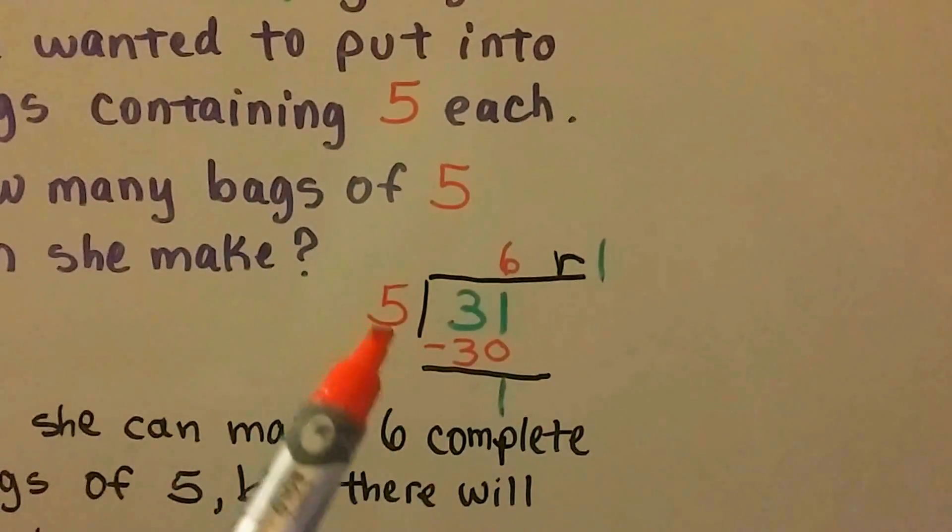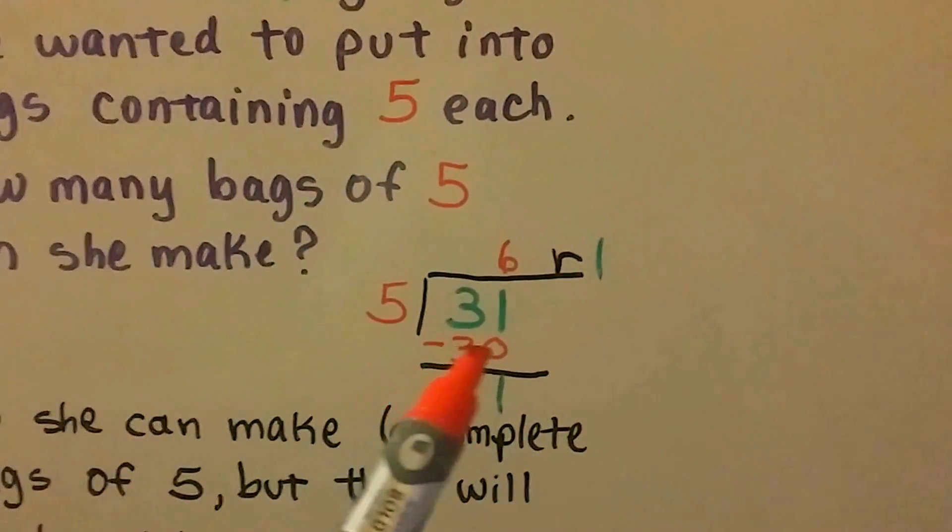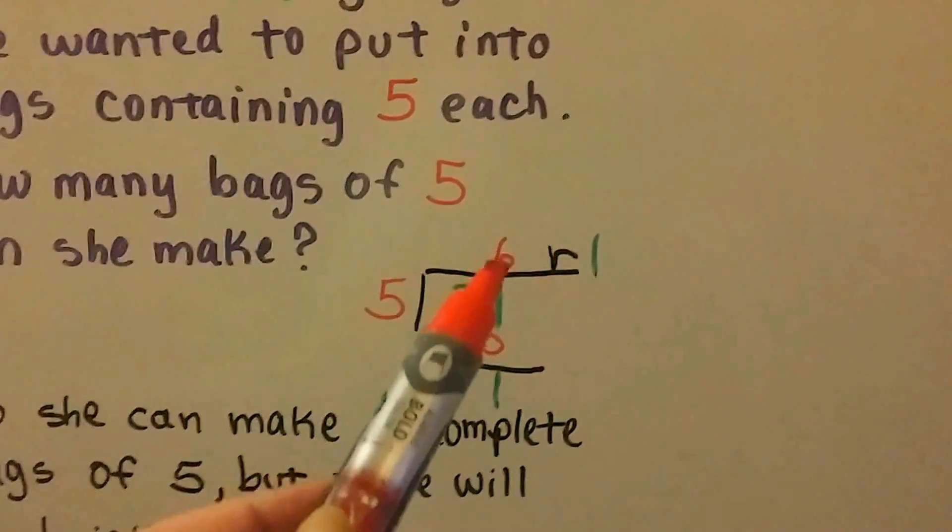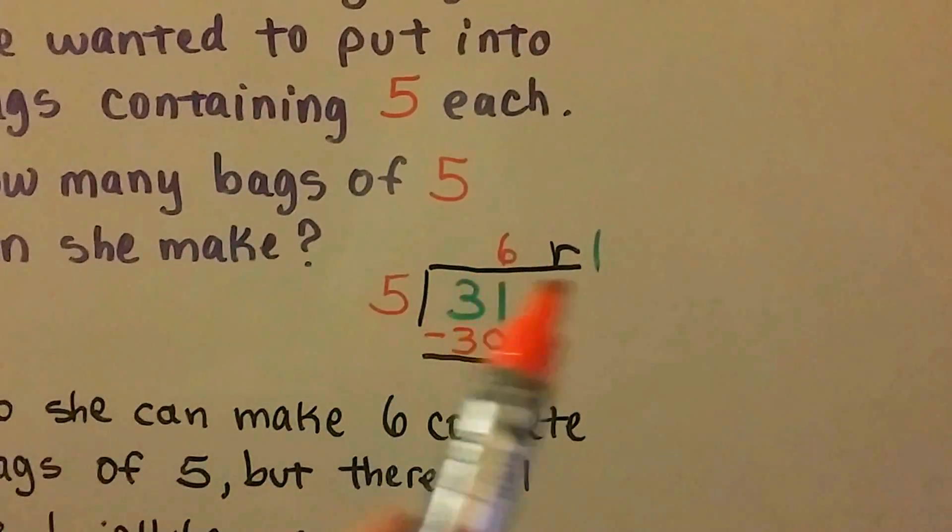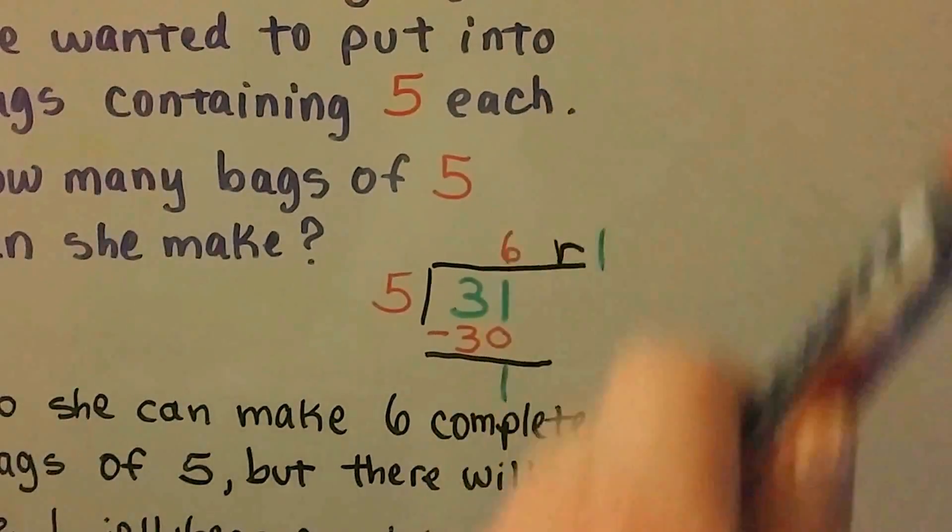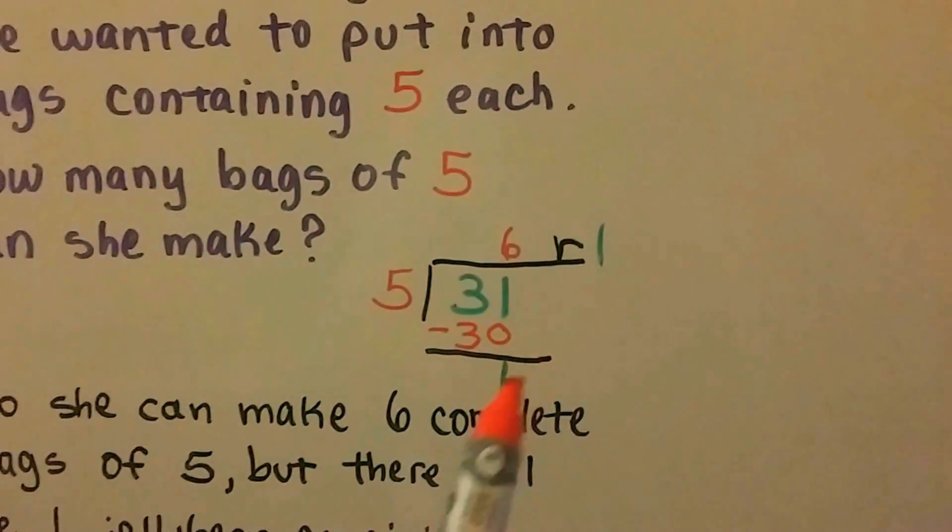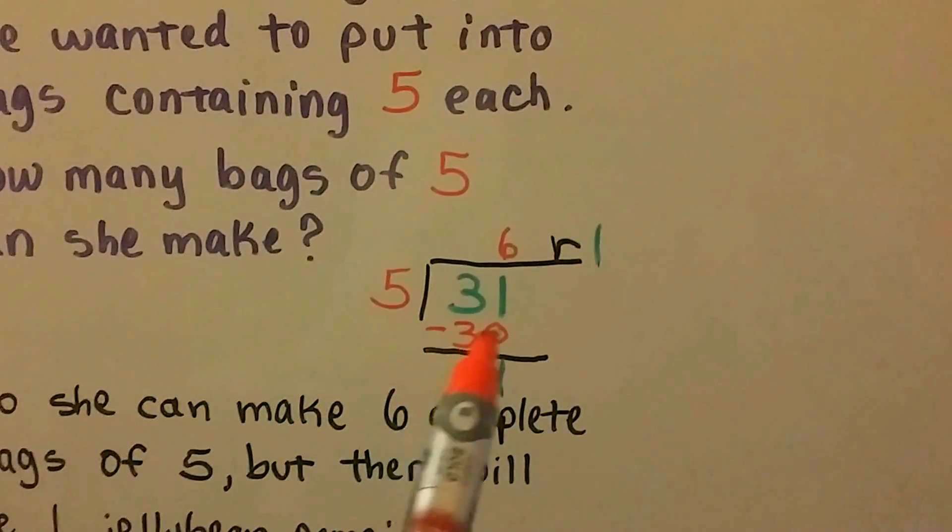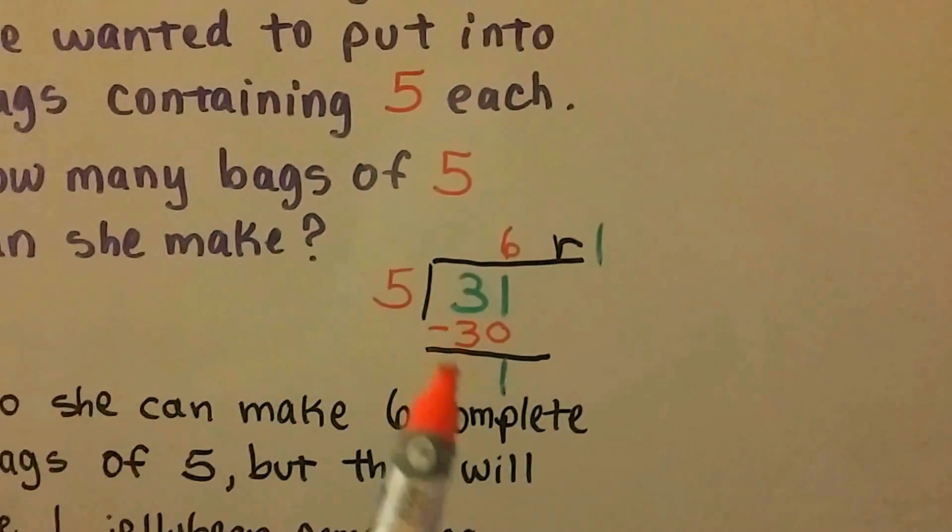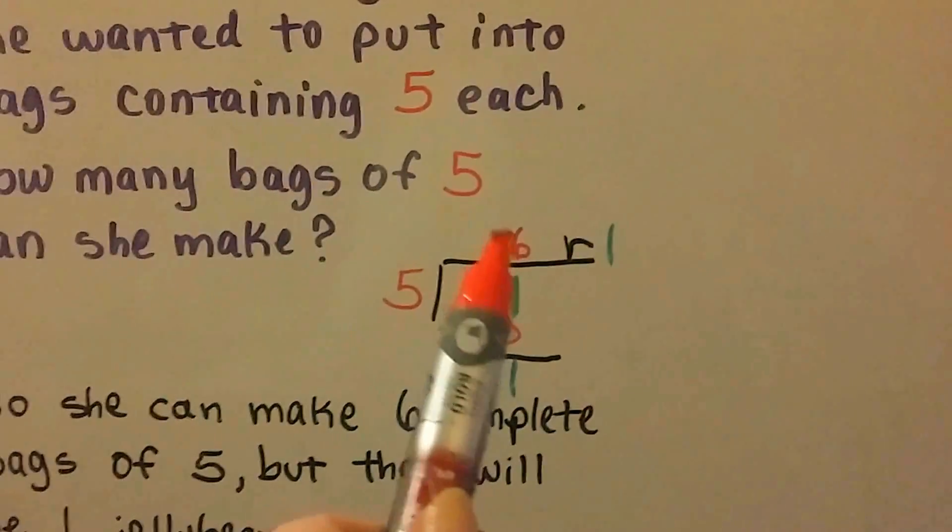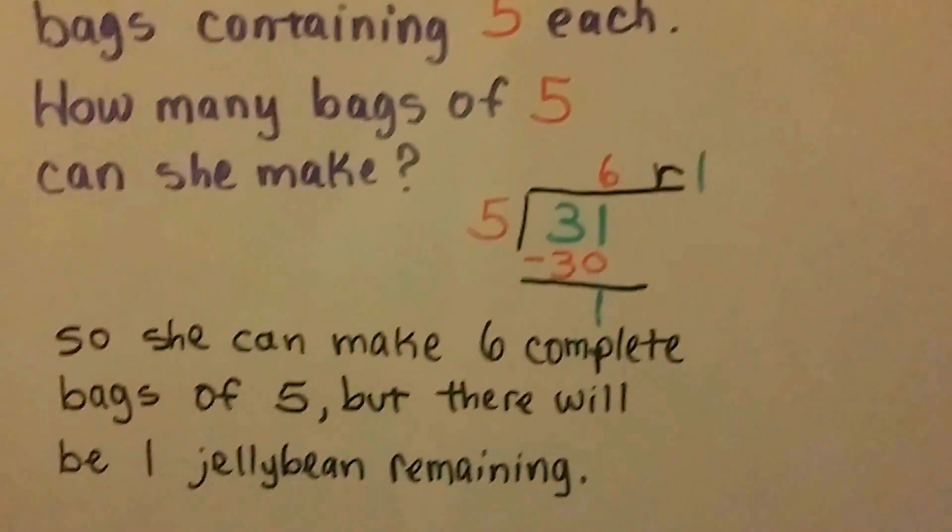Well, 5 times 6 is 30. So we put our 6 above the 1 because we're going into the 31, not 3. So the answer goes up there. And we subtract the 30, that is 5 times 6, and we get 1 left over. So that's 6 bags, but there's 1 jelly bean left.